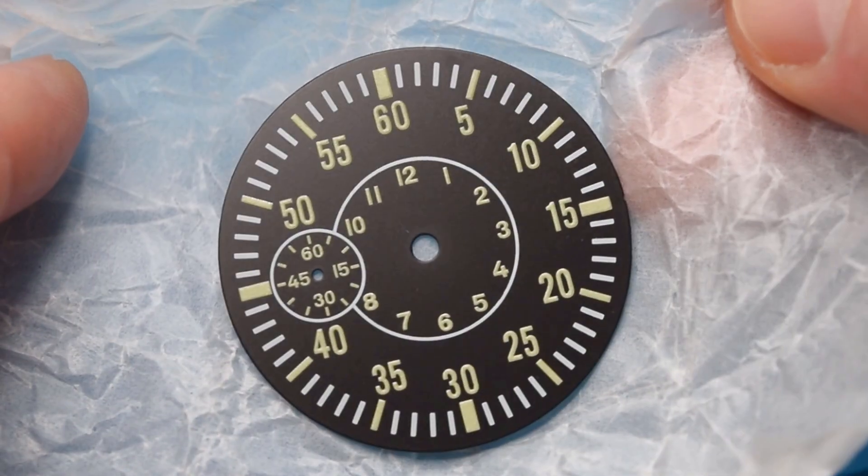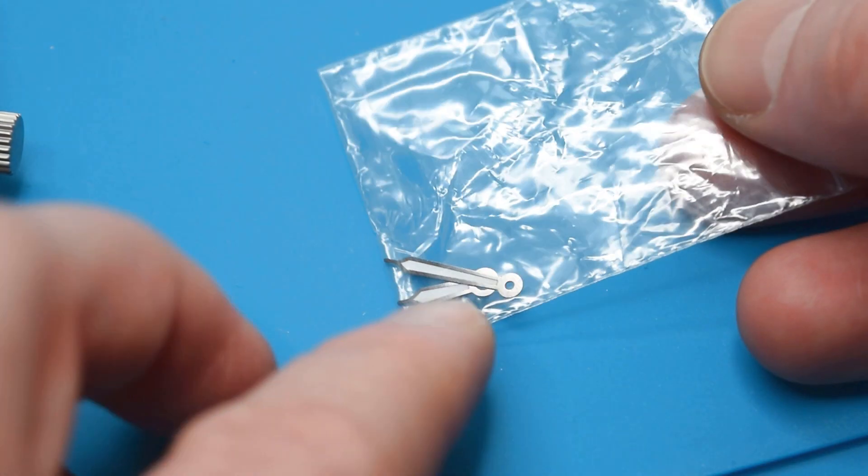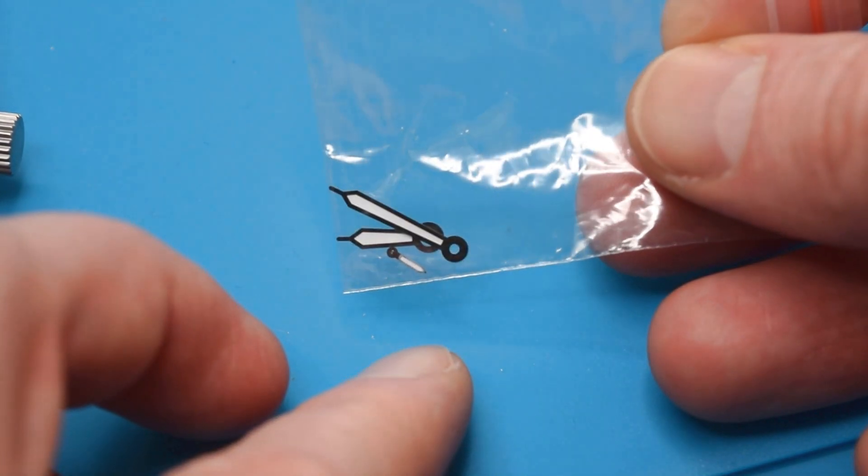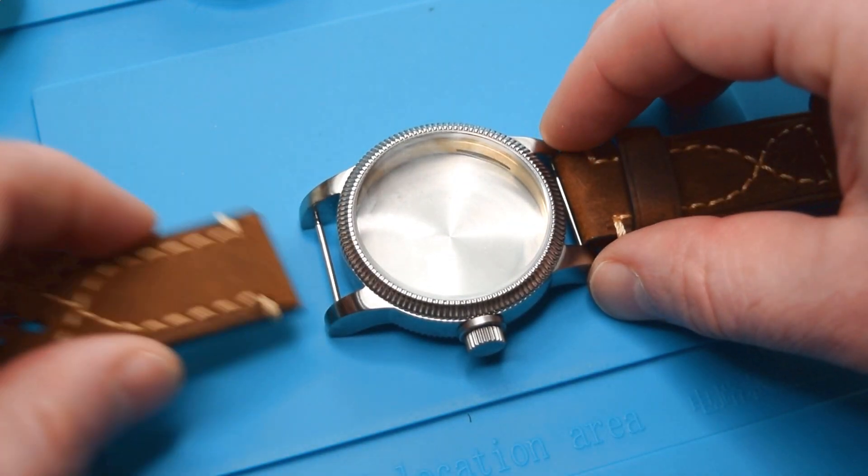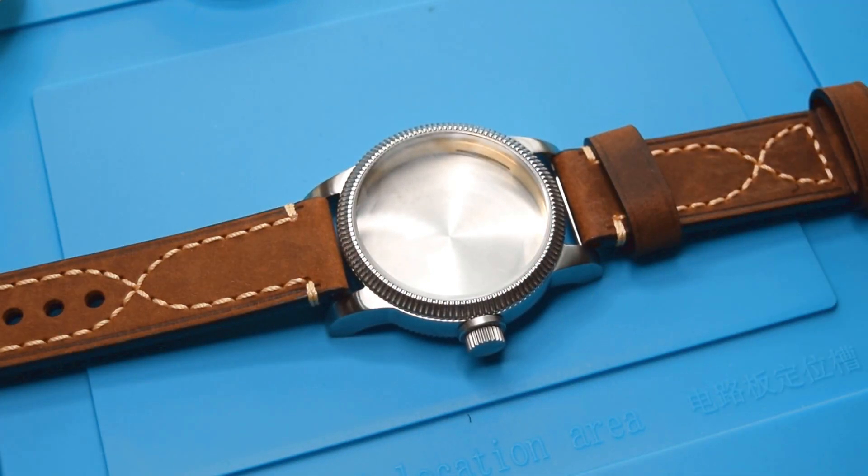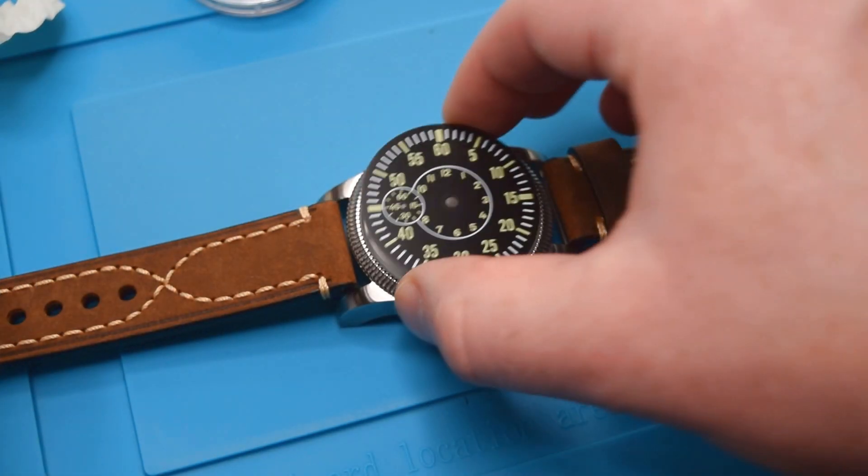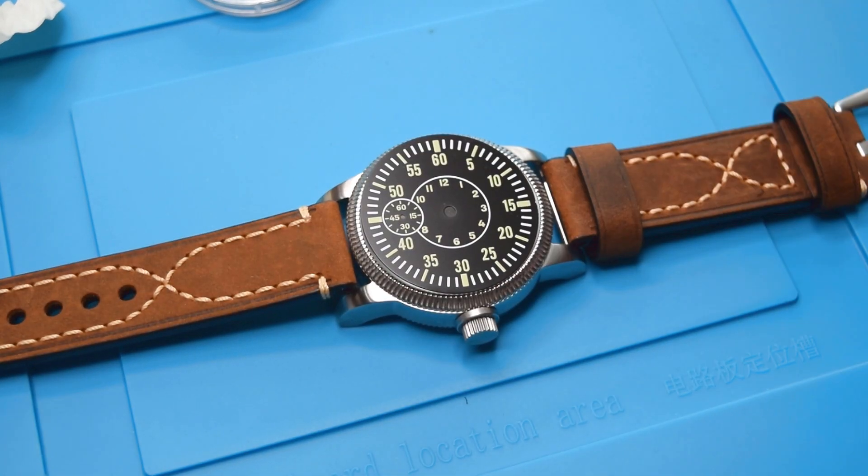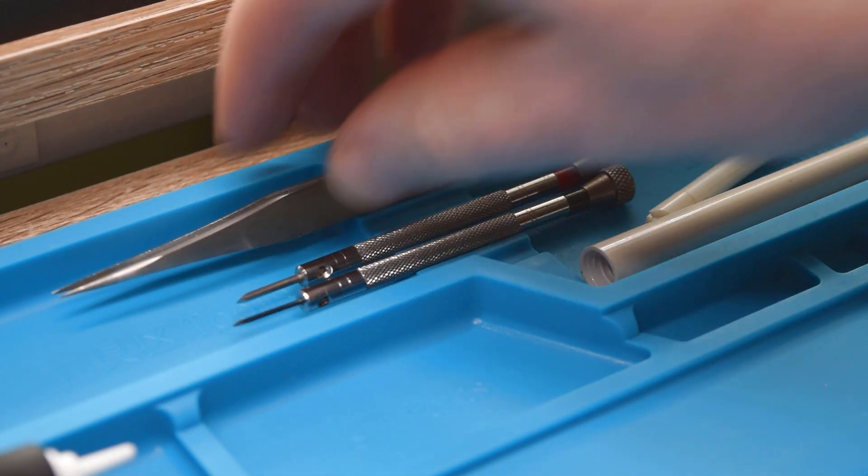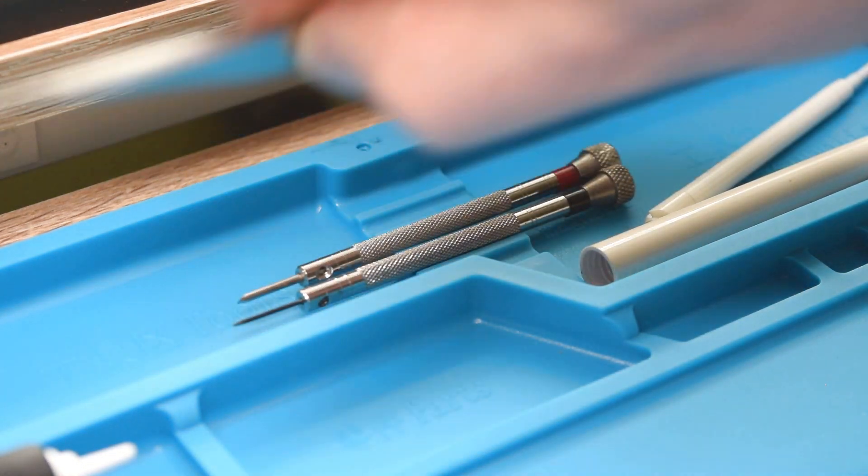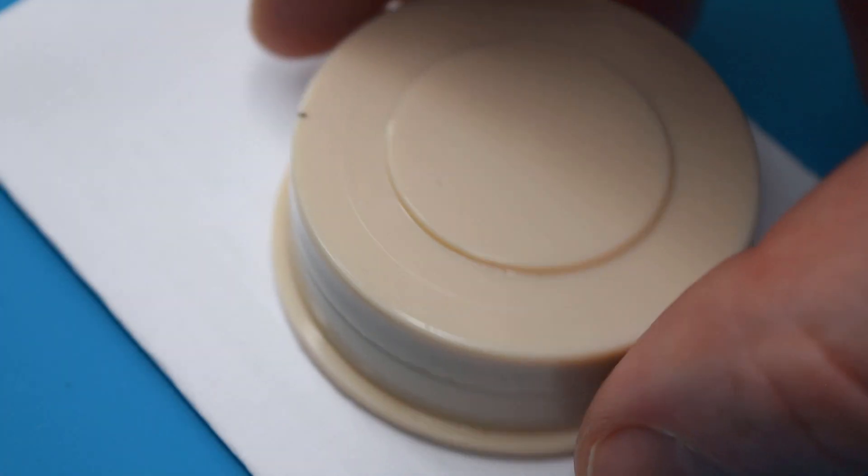It's called Flieger Dial Type B. Of course a set of hands and we cannot forget about a right, a real thick leather strap. That's the strap, brown with white stitches and this gives us some idea how it could look like, this big pilot watch. So let's begin.